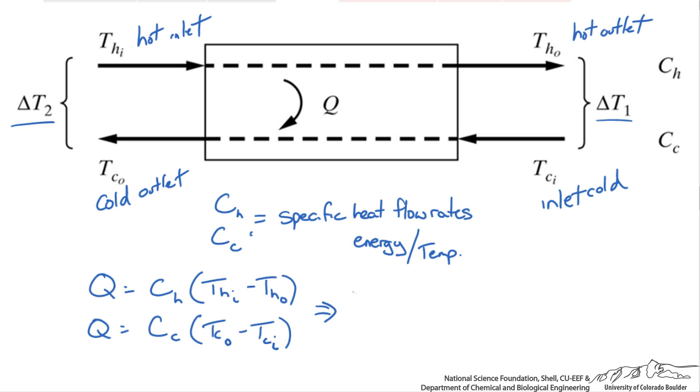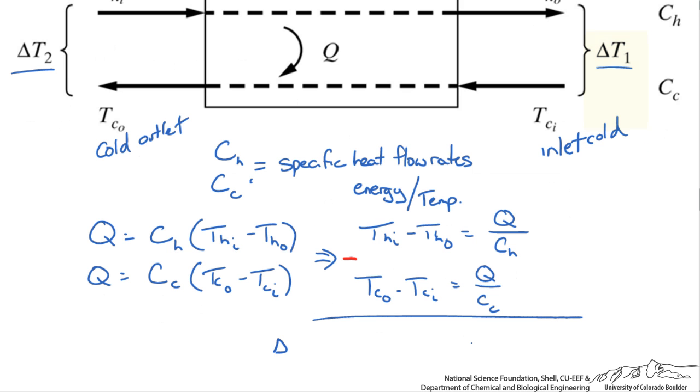We can rearrange these equations. If we subtract the two equations, these two groups form our delta T2 and these two groups form our delta T1. This means that delta T2 minus delta T1 is equal to the heat transfer Q times CC minus CH over CC times CH.